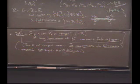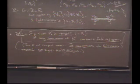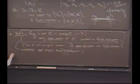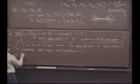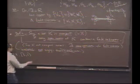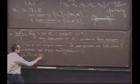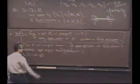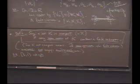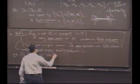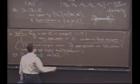The interval (1/2, 1) is not compact because there is an open cover with no finite subcover. Which one? The V_n's. So example: (1/2, 1) is not compact — I'll abbreviate compact by CPT — and this is witnessed by the V_n's.